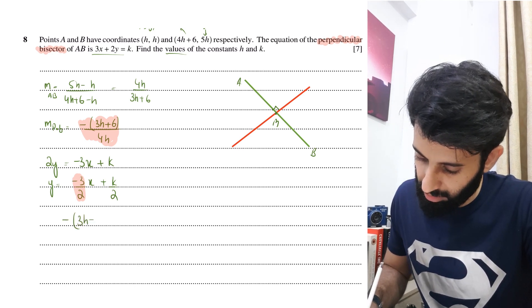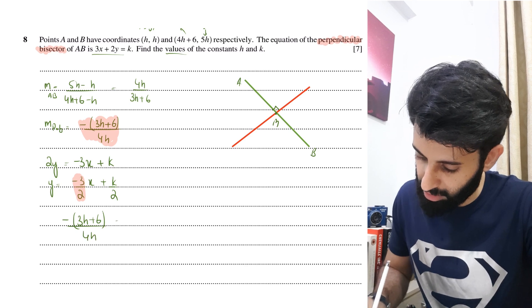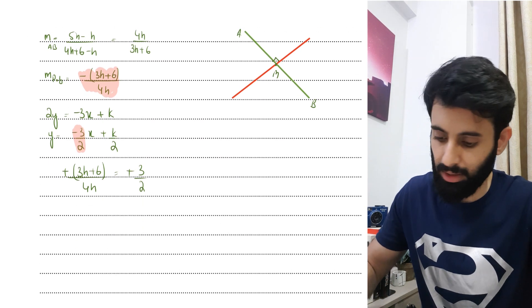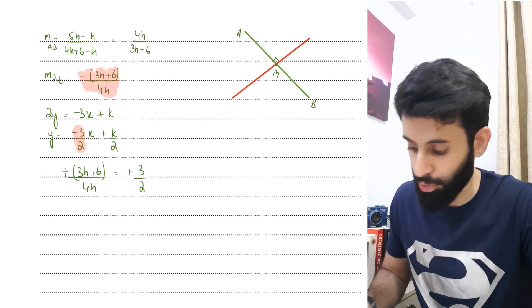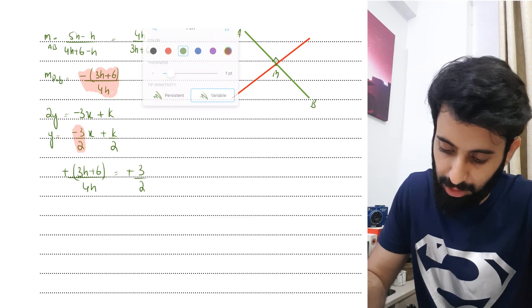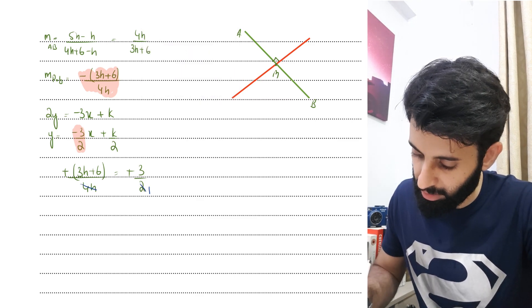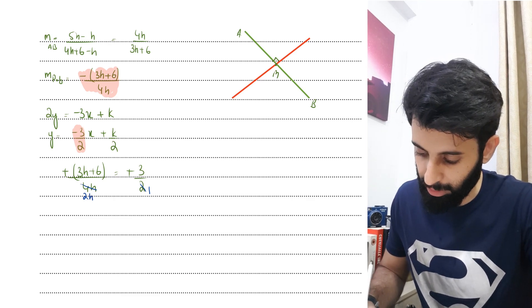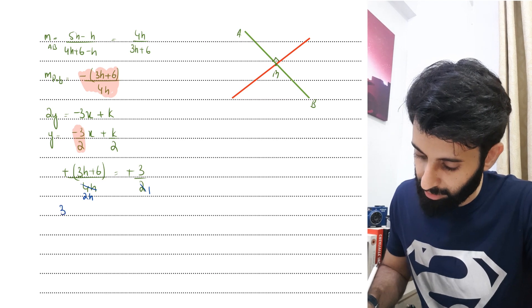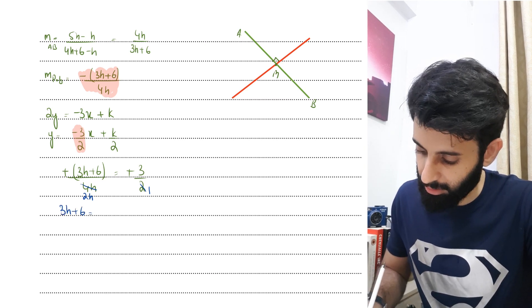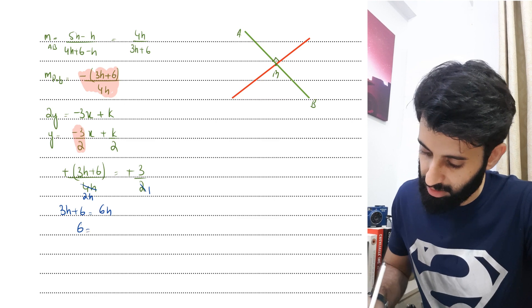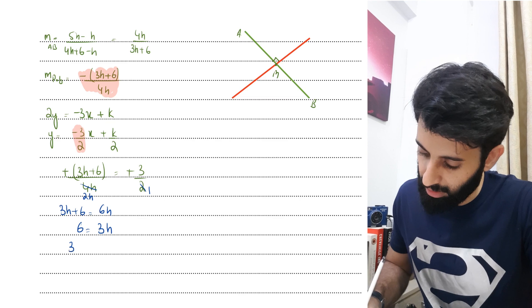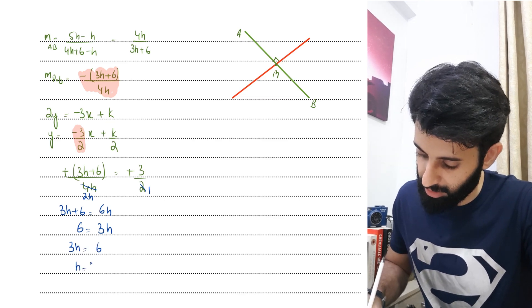So we have -(3h + 6)/4h equals -3/2. Luckily, we have minus on both sides, so we can just cancel them out. Now, if we cross multiply, we should be able to find out the value of h. Before I cross multiply, let's simplify this. So we have the 2s cancel. The h is still going to be there, so make sure not to cancel that out. Now if you cross multiply, you're looking at 3h + 6 equals 3 times 2h, which is going to be 6h. So 6 equals 3h, because 6h minus 3h is 3h. If I write this nicely, 3h equals 6, which means h equals 2.